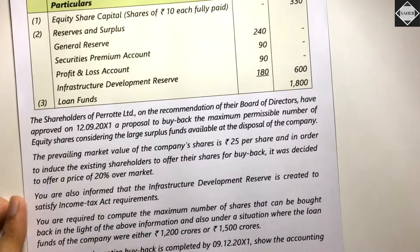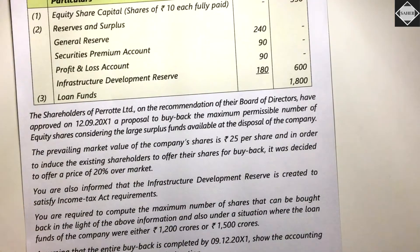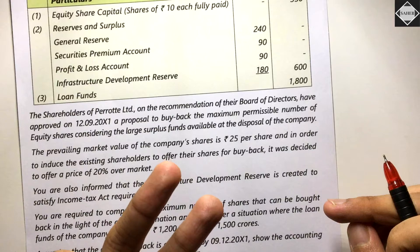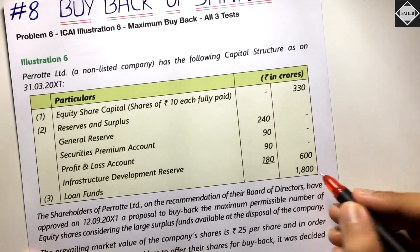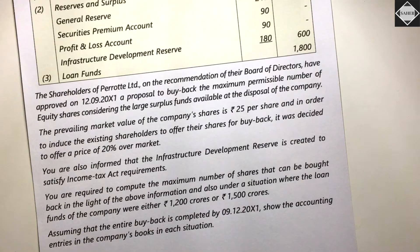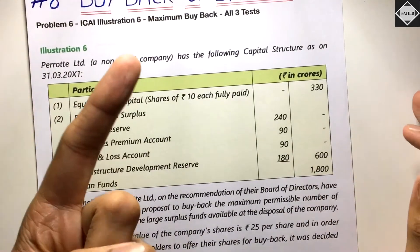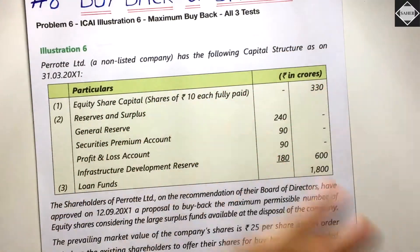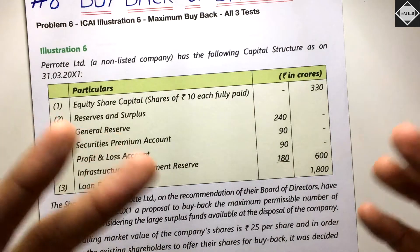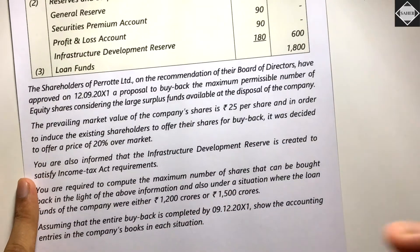You are required to compute the maximum number of shares that can be bought back, and also under situations where the loan funds are either 1200 crores or 1500 crores. So we now have three different questions: Scenario 1 with loan funds of 1800 crores, Scenario 2 with 1200 crores, and Scenario 3 with 1500 crores. The change in loan funds will not impact the Resource Test and Shares Outstanding Test because those tests don't use the debt figure — it only affects the Debt-Equity Ratio Test.